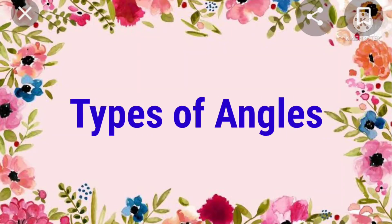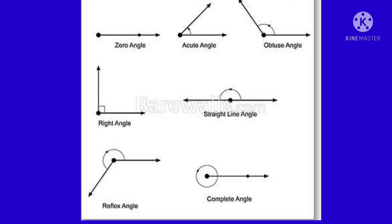And then types of angles we have to learn. There are 7 types of angles in this image. Watch the image carefully: zero angle, acute angle, obtuse angle, right angle, straight line angle, reflex angle, and complete angle.